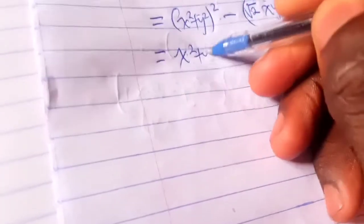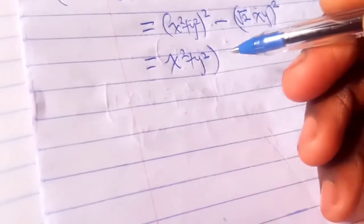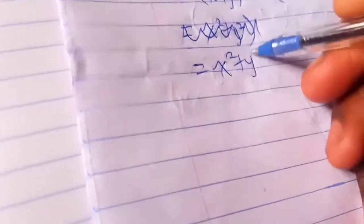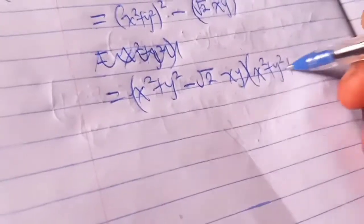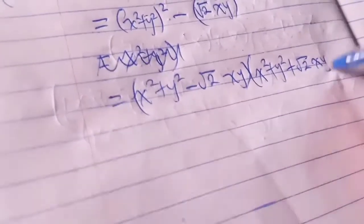I'm just going to enter with x squared plus y squared. You're going to enter with x squared plus y squared minus root 2xy, times x squared plus y squared plus root 2xy. And here is the factor of x to the power of 4 and y to the fourth power.